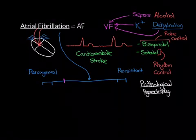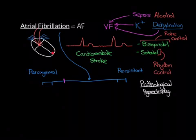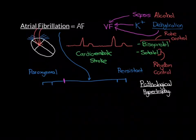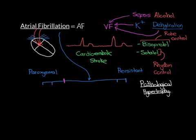Long-term high blood pressure leads to this pathological remodelling of the left ventricle — pathological hypertrophy. The left ventricle gets weaker and weaker over time, and that actually leads to heart failure in the end: left ventricular failure, hypertensive heart disease. However, we're not actually so interested in that here; we're interested in what happens to the atrium because we're interested in atrial fibrillation.